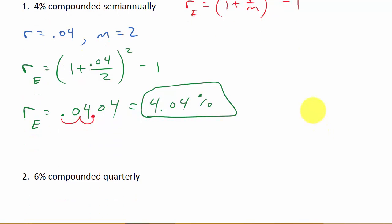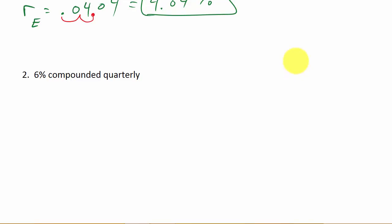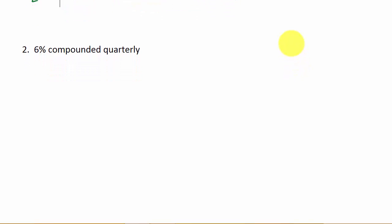Let's look at the next example. So, 6% compounded quarterly. Let's write our formula down. R sub E is equal to 1 plus R over M raised to the M minus 1. So let's get R and M.